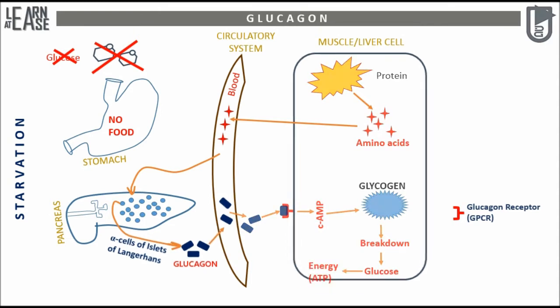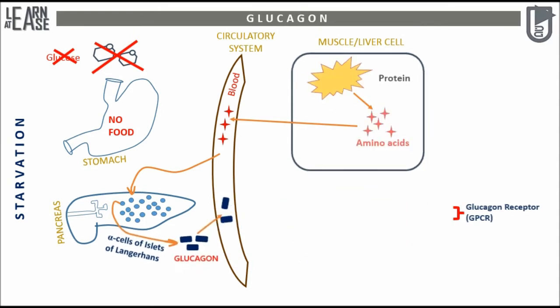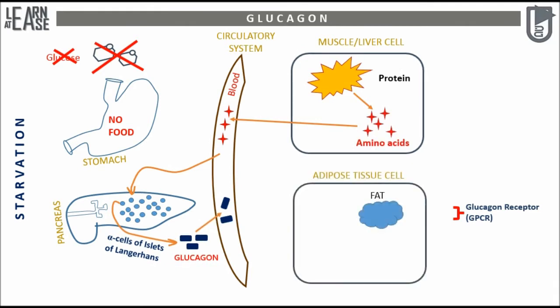A similar mechanism also occurs in the adipocyte, which stores fat. Glucagon-specific GPCR is also located on its cell membrane. Binding of glucagon to GPCR will induce a cascade of reactions in the same way to catabolize fat to produce energy from the reserved food storage during starvation.